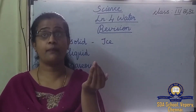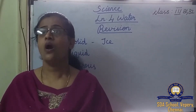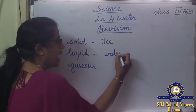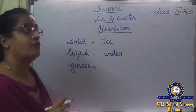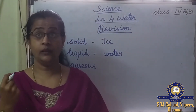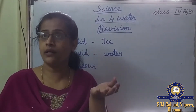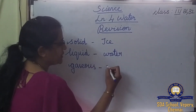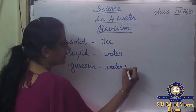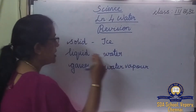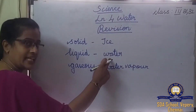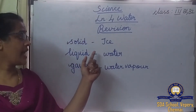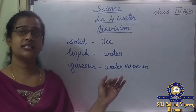When you heat the ice, it starts melting. Water is in the liquid form — water itself is the liquid form. When you heat water, it changes into water vapor. Water vapor is the gaseous form of water. So: solid form is ice, liquid form is water, and gaseous form is water vapor.